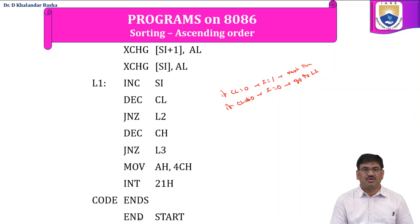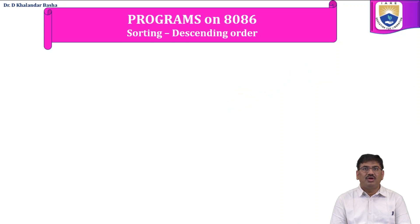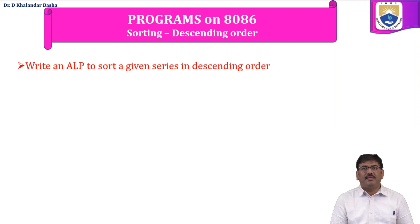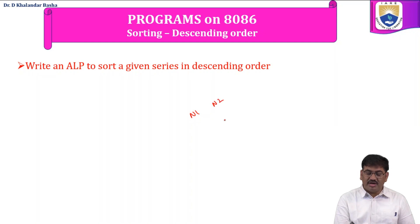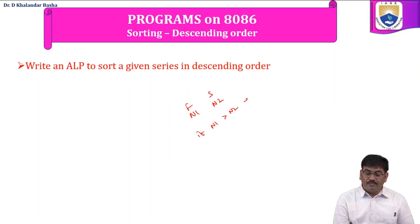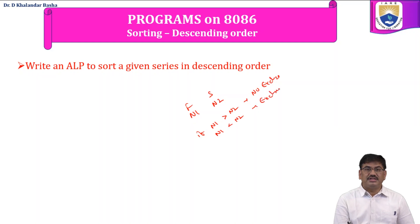Now we will write a program for descending order. The only difference between ascending and descending order sorting is the exchange condition. For descending order: if N1 is greater than N2, do not exchange. If N1 is less than N2, go for the exchange instruction. This is the only difference between ascending and descending order programs.